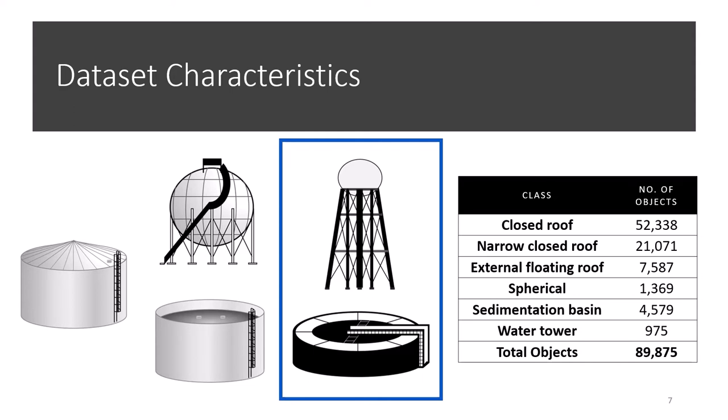We have labeled over 19,000 images and close to 90,000 objects. Most of these objects are in the closed roof class. We expect this is because they are the most commonly used type of tank.